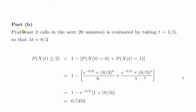So the second question here is at least two calls in the next 20 minutes. So our time period here is 20 minutes, now that's actually one-third of an hour. So we're dealing with hours. So lambda times t is 8 times one-third, lambda times 1 over 3, 8 over 3.